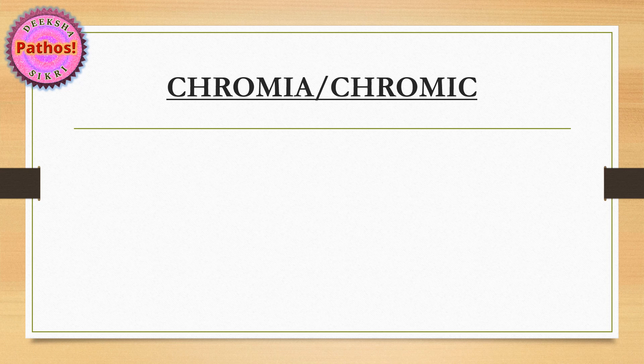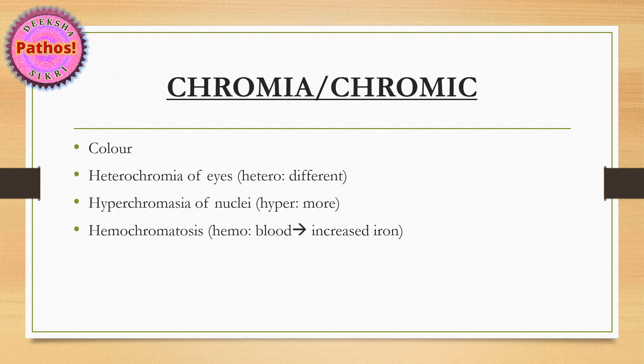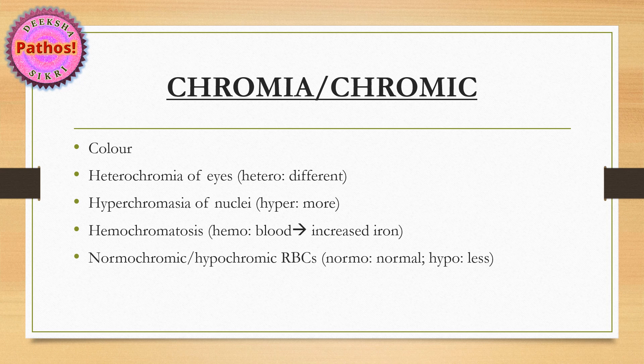Next, chromia or chromic — very simply, it basically means color. Heterochromia means different colors in both eyes. Hyperchromasia is a term used classically in malignancy — hyper means more. Hemochromatosis means blood color is more, because of increased iron. Normochromic or hypochromic RBCs — normal means normal color, hypo means less — as in microcytic hypochromic RBCs.